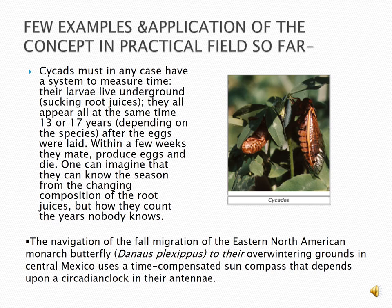The navigation of the fall migration of the Eastern North American Monarch Butterfly, Danaus plexippus, to their overwintering grounds in Central Mexico uses a time-compensated sun compass that depends upon a circadian clock in their antennae.